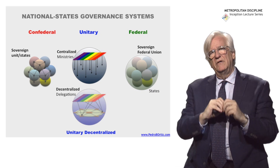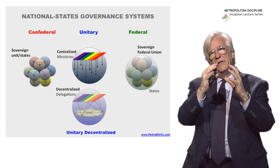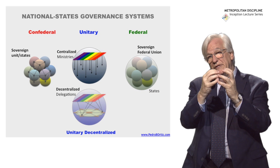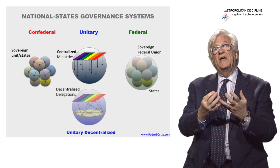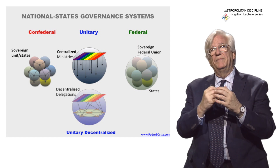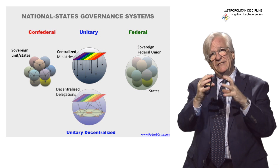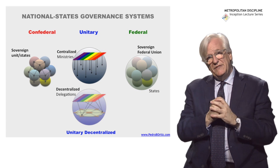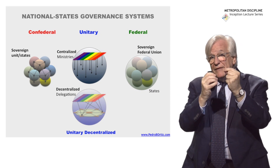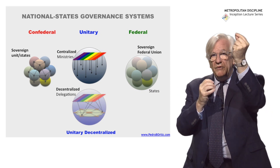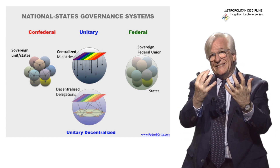In the unitary system, the ministries at the center of the country's political system can have a delegation — like in France, where the préfet is appointed by the president to coordinate the different ministries and investments in the metropolis. That can work just as well as if that préfet, instead of being appointed by the president, is elected by the population and represents them.